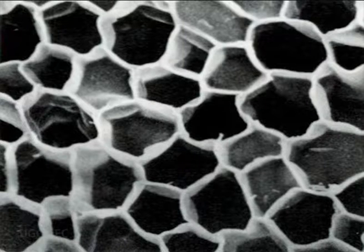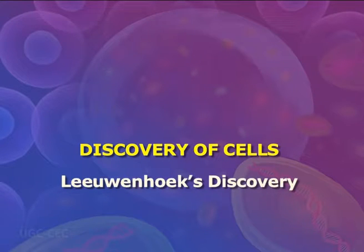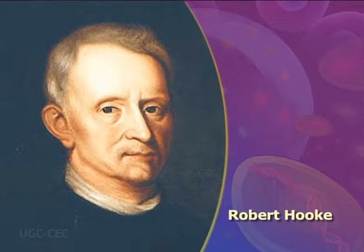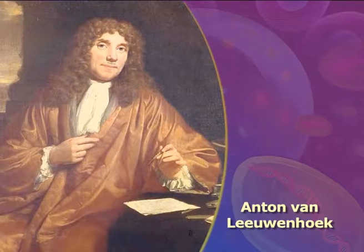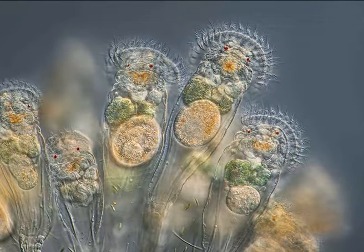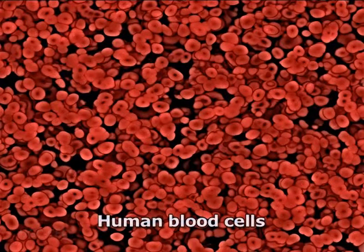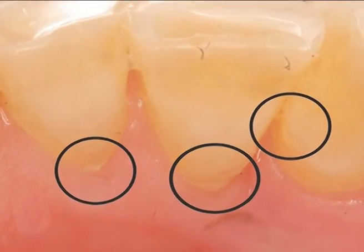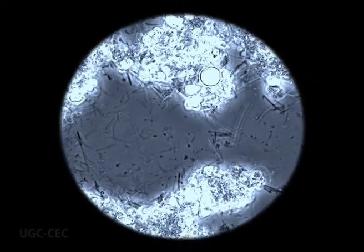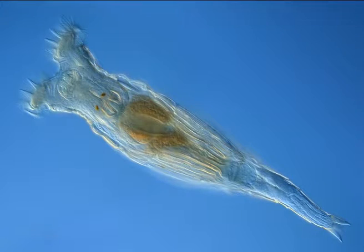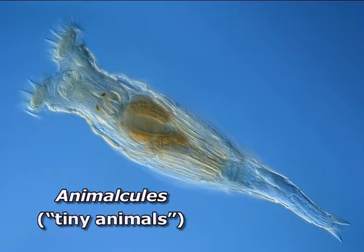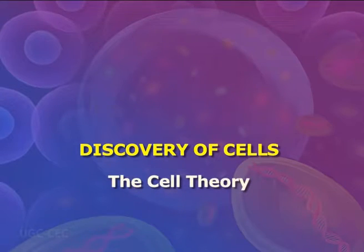The cork was made up of many tiny units which Hooke called cells. Soon after, Anton van Leeuwenhoek in Holland made other important discoveries using a microscope. Leeuwenhoek discovered tiny animals such as rotifers and also discovered human blood cells. He even scraped plaque from his own teeth and observed it under the microscope. He saw tiny living things with a single cell that he named animalcules, meaning tiny animals.